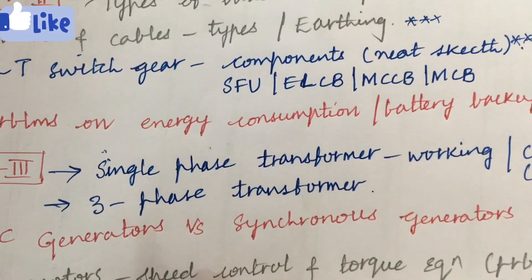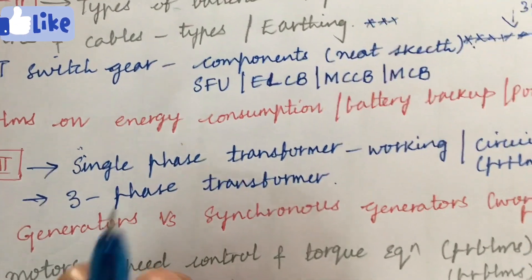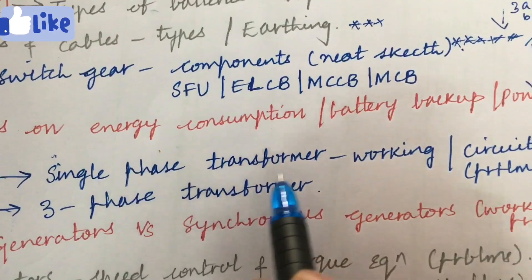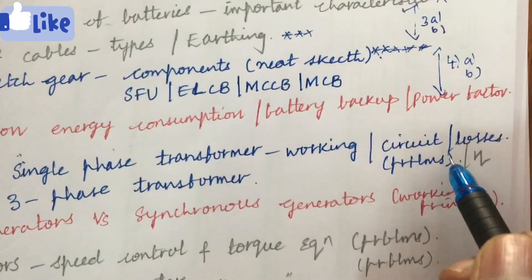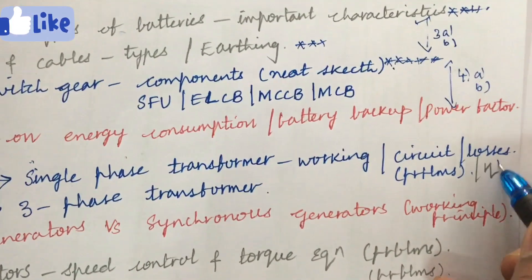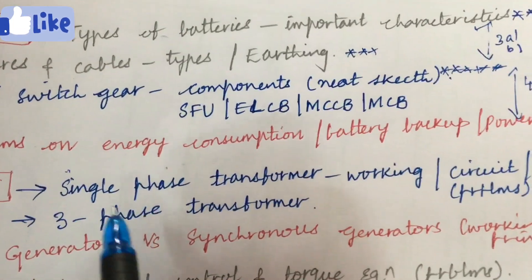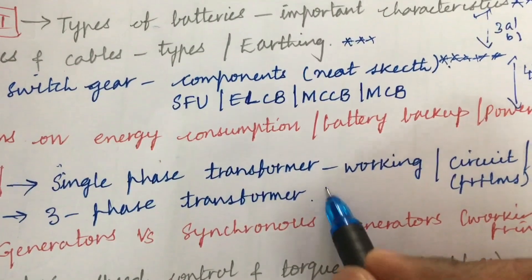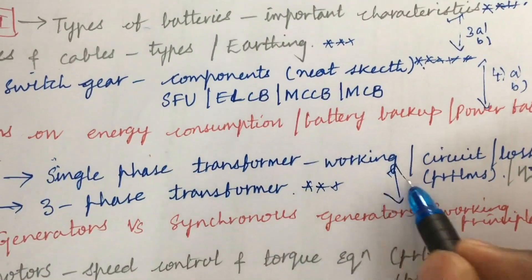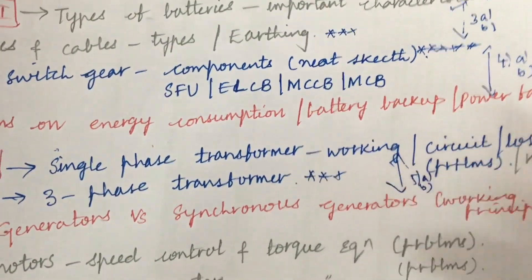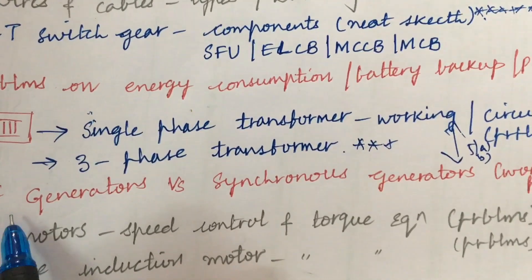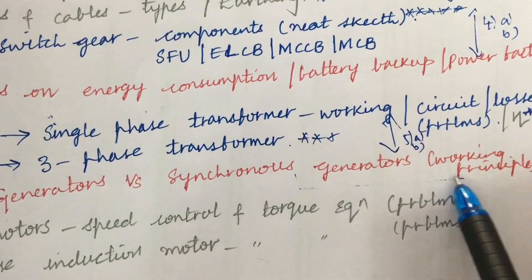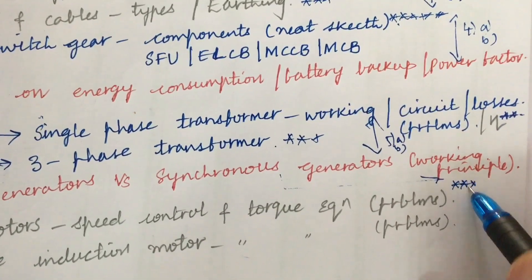Unit 3 is all about transformers and generators. The first gunshot question is the single-phase transformer — its working principle, circuits, problems, and problems related to finding losses and efficiency. Three-phase transformer concepts are also a gunshot question. From these two you will get one question for sure — 5A as well as 5B. Sometimes they may ask the differences between DC generators and synchronous generators, or the synchronous generator working principle, which is also a very important gunshot question.